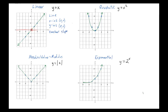Linear is the only type of function out of all the functions in the universe that has a constant slope, which means it has exactly the same direction and the same angle the whole time. Notice that quadratic is always changing slope, as is the exponential, and absolute value changes once right at the bottom. So linear is the only one with a constant slope.